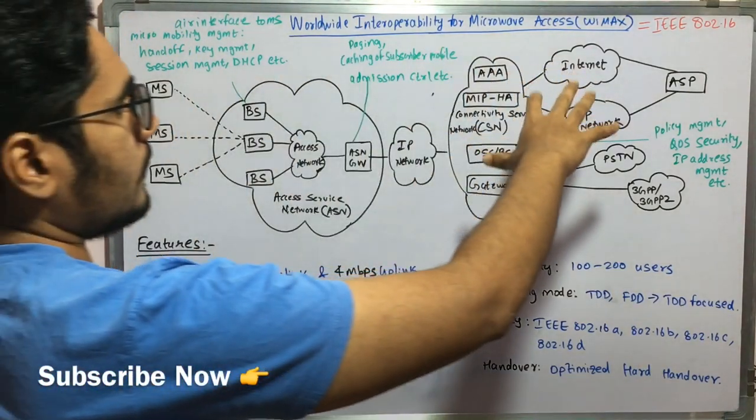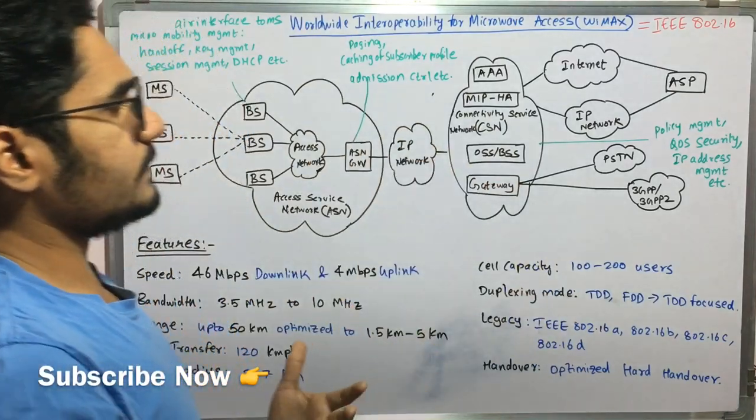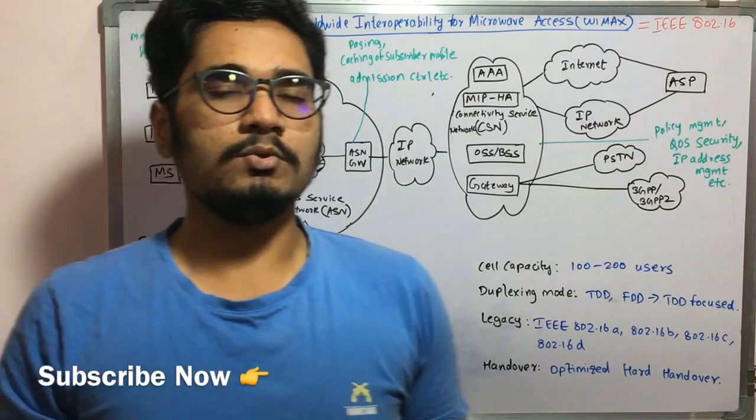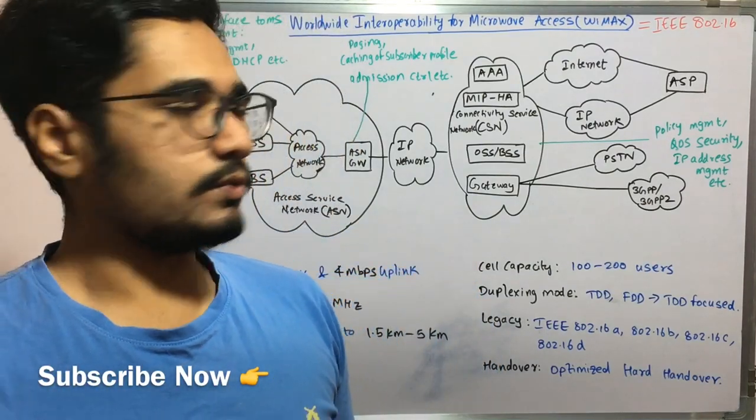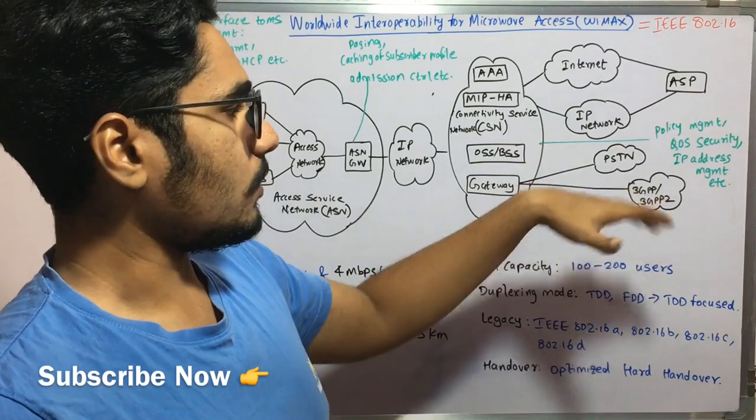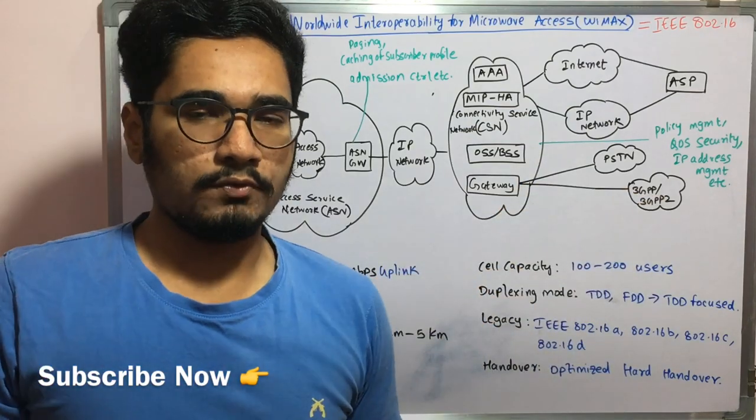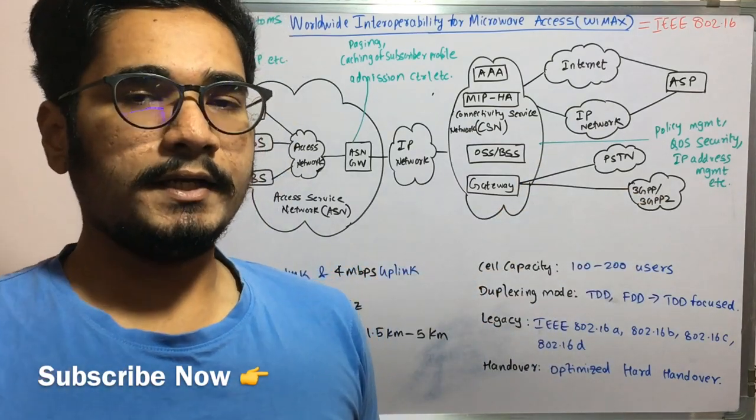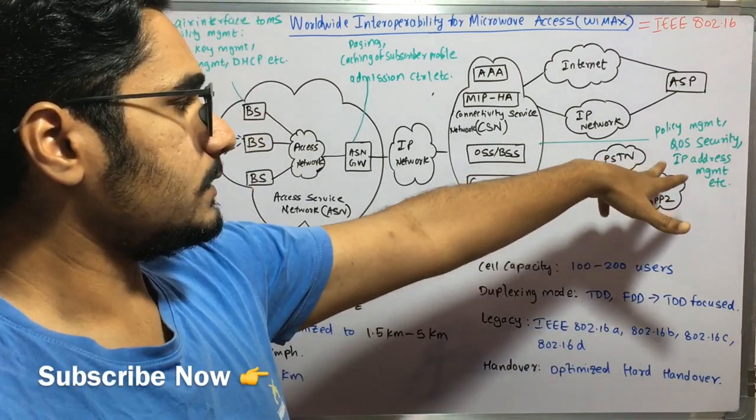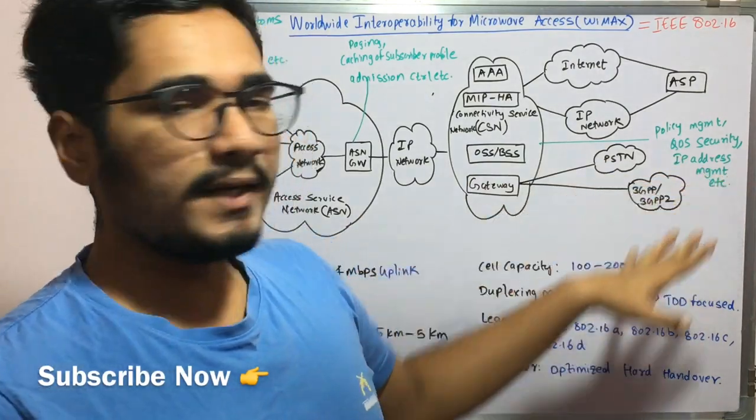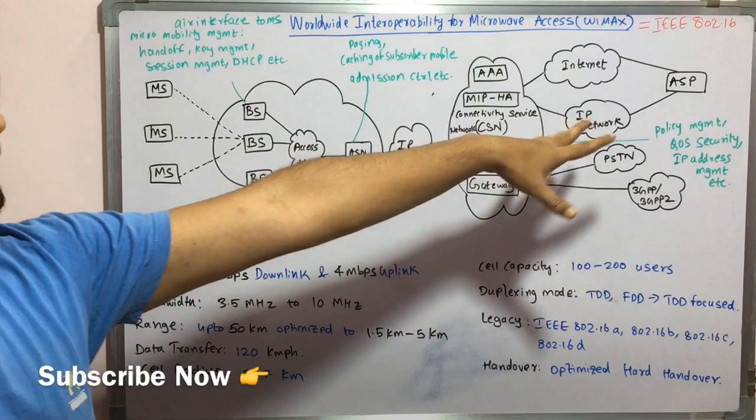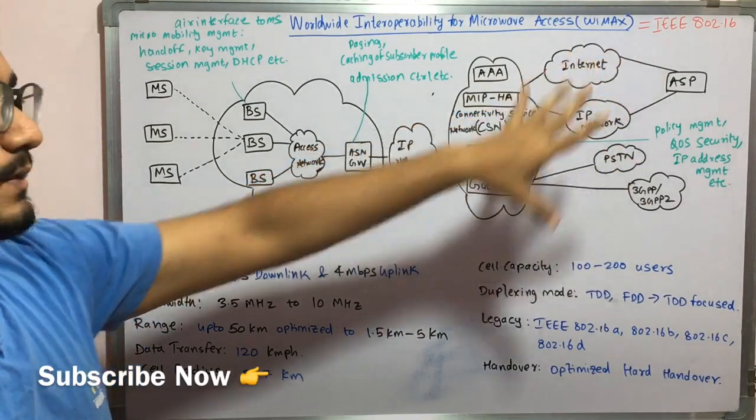So this mainly connectivity service network deals with the policy management, different policies of the users whether he is able to read, write, or access different resources over this WiMAX systems, and the quality of service security, whether the proper handoff is done or whether the call is getting dropped or the different strength and weakness of that particular user is seen over here. Then you have the IP address management, different IP addresses are managed over this network which is then forwarded onto this application service provider.